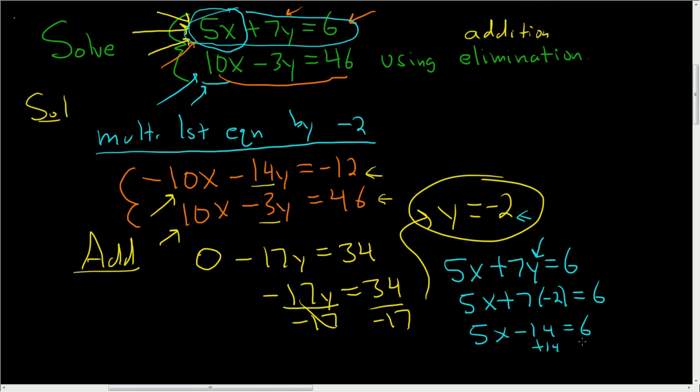Add the 14. Running out of room. So 5x is 20. Divide by 5.